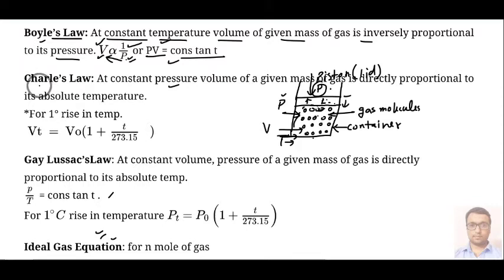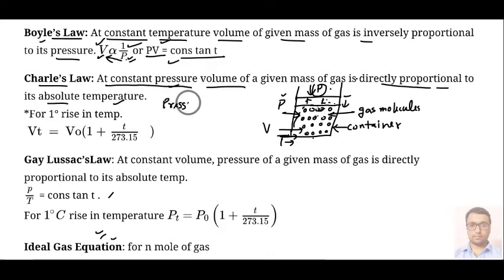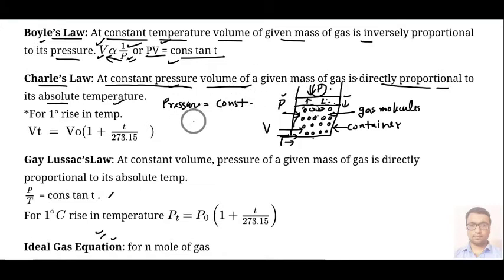The second law is Charles' law. This law says that at constant pressure, volume of a given mass of a gas is directly proportional to its absolute temperature. If your pressure is constant — not increasing, not decreasing — then volume is directly proportional to temperature.